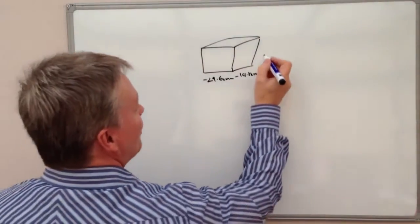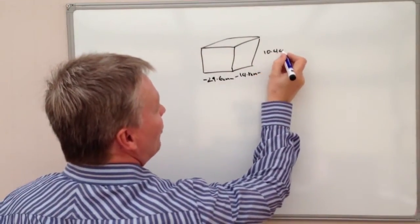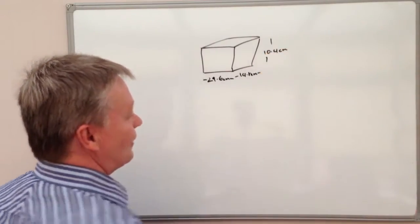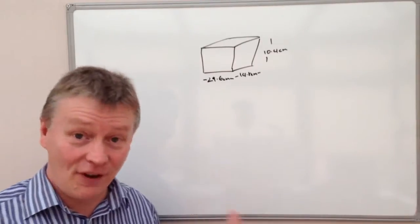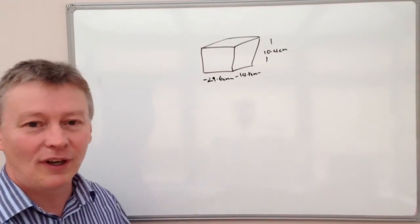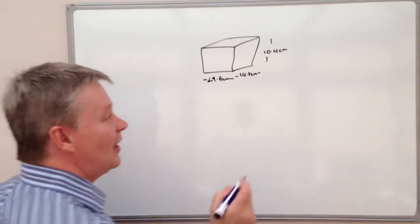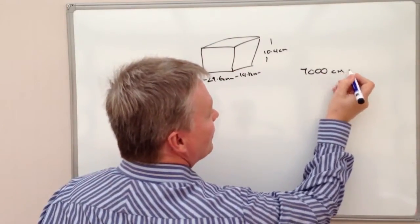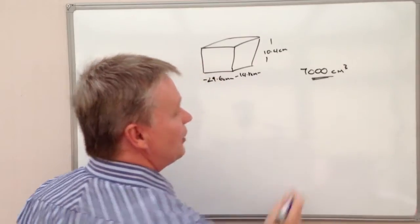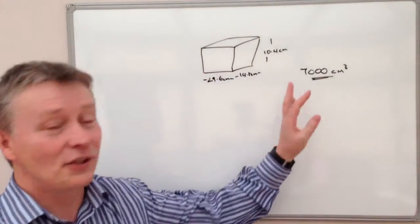The question is that you want to go into a store and you want to buy some fish, and the fish that you buy need to have a volume of 7,000 centimeters cubed. Okay, so this is the requirement.